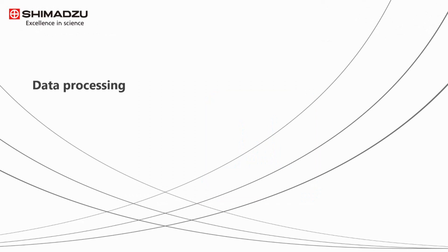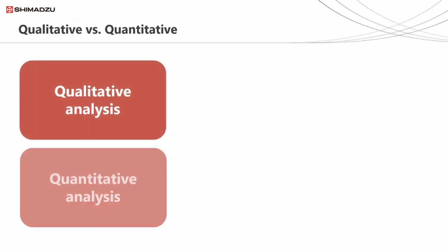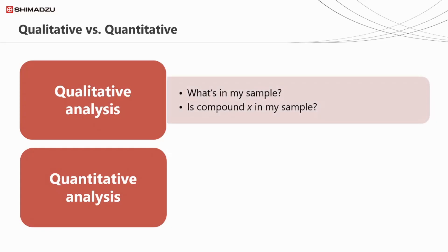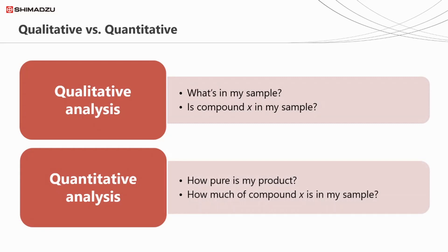So at this point, we need to decide what information we want from our sample. The options we have are qualitative or quantitative analysis. Qualitative analysis looks to identify what's in a sample, whilst quantitative analysis goes one step further and looks to determine how much of a compound is in a sample, or how pure it is.